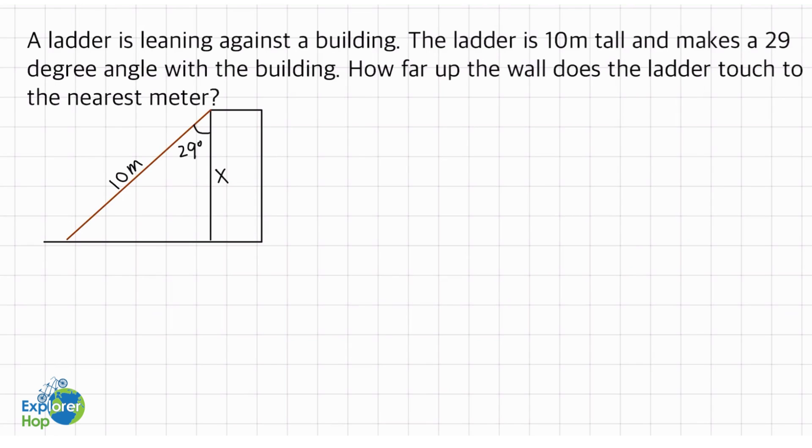Hi everyone and welcome to Explorer Hop. Today we have the problem that a ladder is leaning against a building. The ladder is 10 meters tall and makes a 29 degree angle with the building. How far up the wall does the ladder touch to the nearest meter?